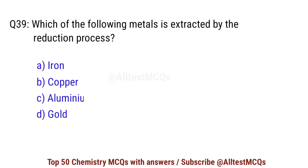Question number 39. Which of the following metals is extracted by the electrolytic reduction process? Correct option is C: aluminum.